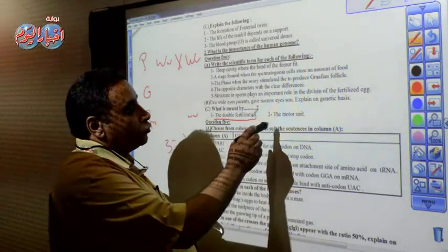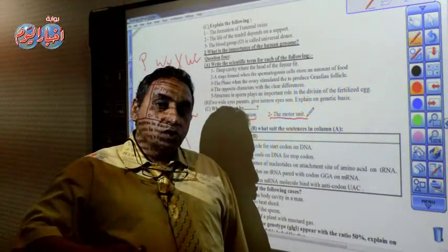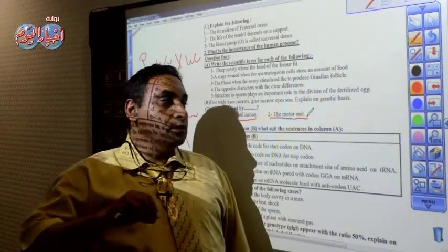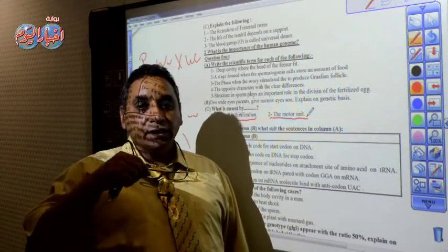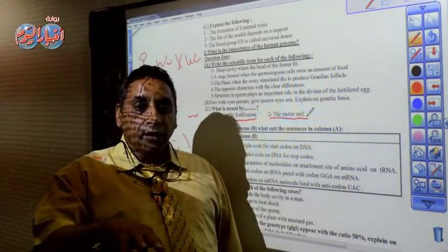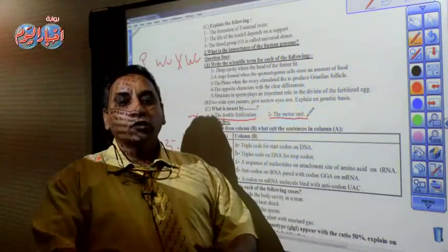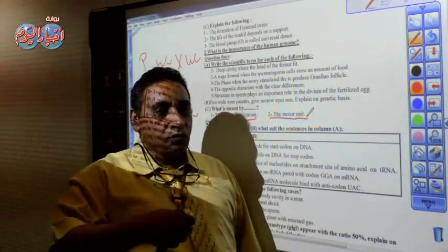But what about the motor unit? We remember that the motor unit is the unit function of the muscles, and each motor nerve divided into from five to a hundred branches, each supply the muscle plate. And the contraction of all the units of the muscle leads to the contraction of the muscle.